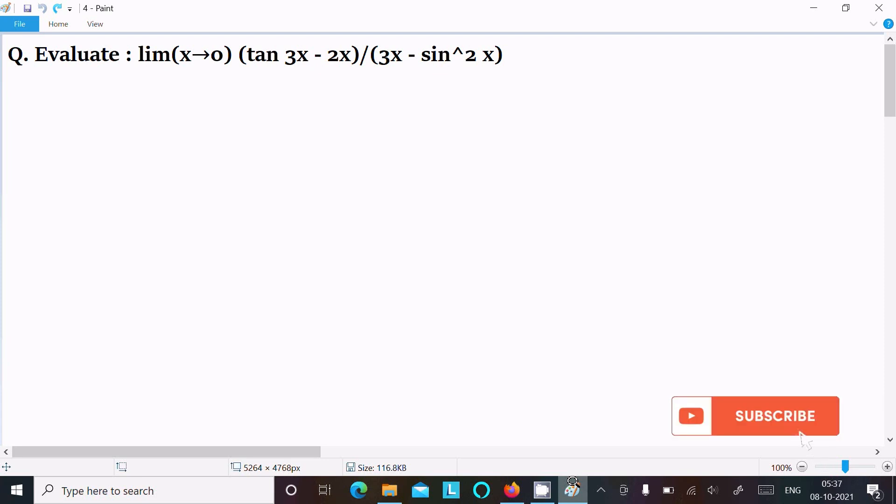In this video lecture I am going to evaluate limit x tends to 0: tan 3x minus 2x divided by 3x minus sin squared x. So let's see the answer. First, writing the given limit x tends to 0.